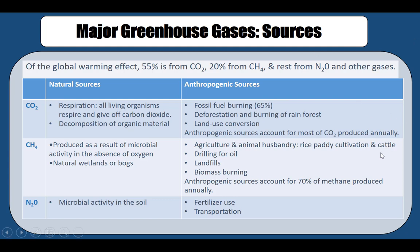Cattle also release a lot of methane, as do drilling for oil, landfilling, and biomass burning. As we do more and more of these activities, anthropogenic sources now account for about 70% of methane produced annually across the globe.